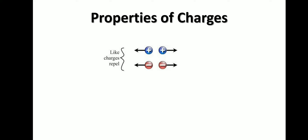Now let's look at the properties of charges. When we bring two positive charges together, or two negative charges together, they repel each other. This positive charge has a lack of electrons, and the other positive charge also has a lack of electrons — they cannot fulfill each other's requirement, so they repel each other. Similarly, two negative charges both have excess electrons and cannot fulfill each other's requirement, so they also repel each other.